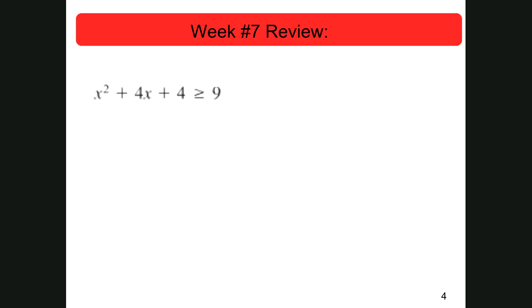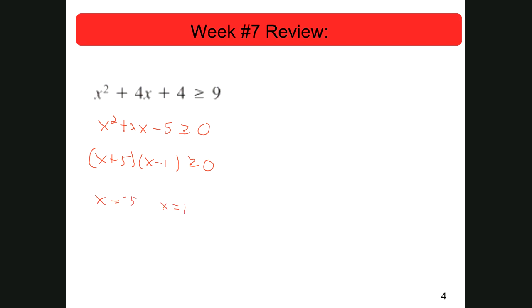If I'm going to do this problem, the first thing I'm going to do is subtract 9 from both sides, so this becomes x squared plus 4x minus 5 is greater than or equal to 0. Then I'm going to factor this. This becomes x plus 5, x minus 1, is greater than or equal to 0. My values are going to be x equals negative 5 and x equals 1. So I make a number line and put those values in there — negative 5 here, 1 here.